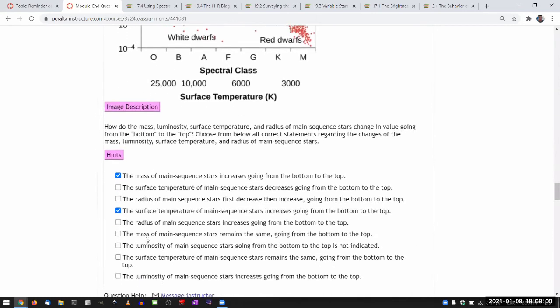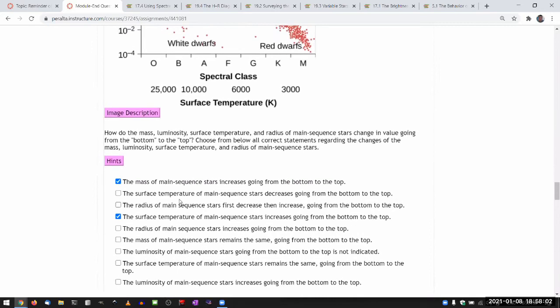Okay. Radius of main sequence stars increase because that's associated with the increasing luminosity and increasing mass. Mass of main sequence stars remain the same. No, not if you are following the curve that was on the chart. Luminosity is not, okay, that's definitely not right.